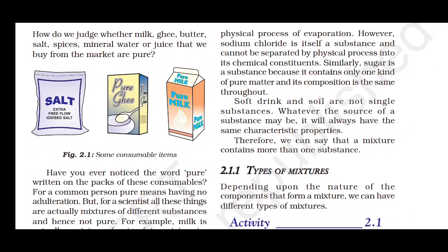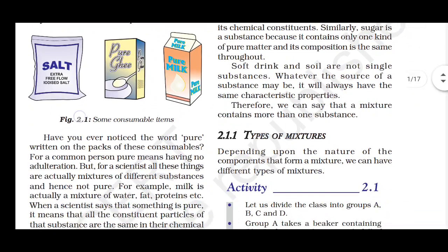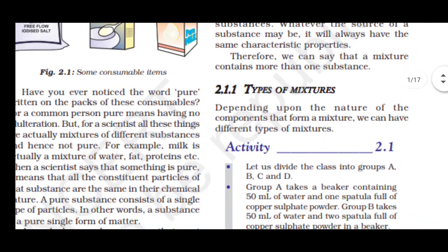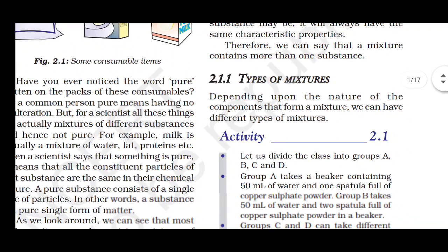Whatever the source of a substance may be, it will always have the same characteristic properties. Therefore, we can say that a mixture contains more than one substance. On the basis of this, mixtures are divided into two types.